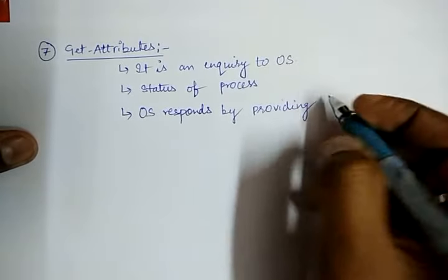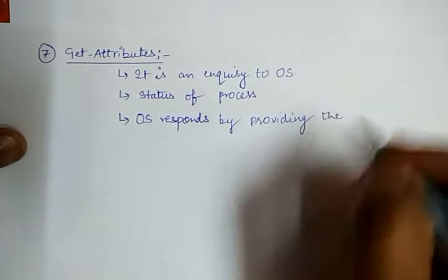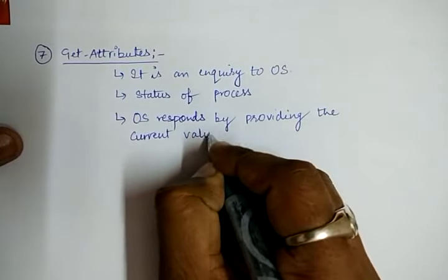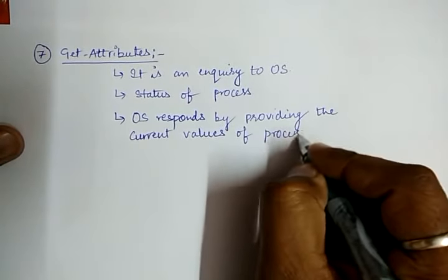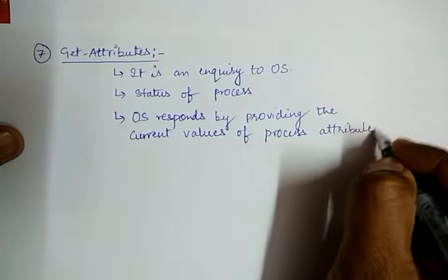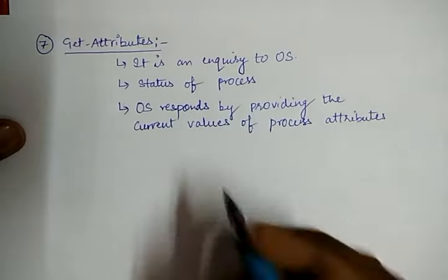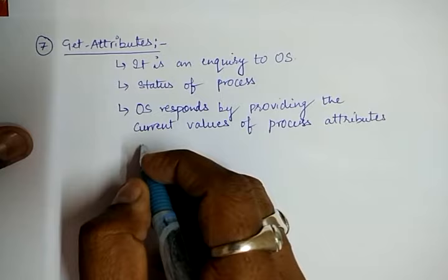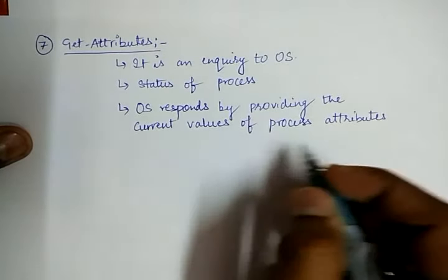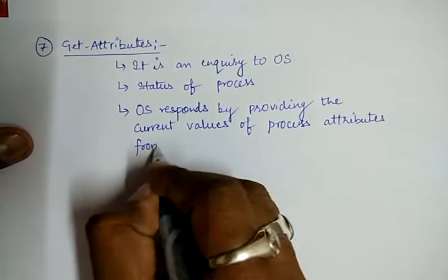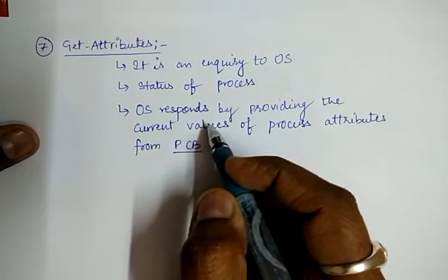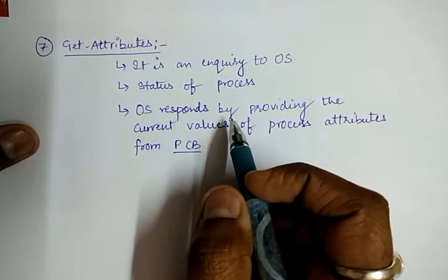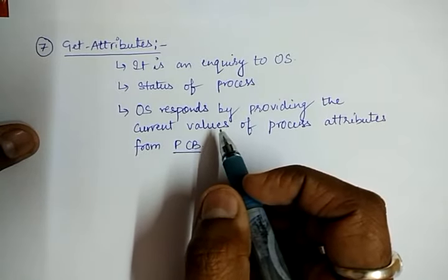The operating system responds by providing the current values of the process attributes. These process attributes are stored in the operating system's process control block (PCB). So the OS responds by providing the current values of process attributes from the PCB, since a process neither knows where its PCB is nor can access the protected system space where PCBs are usually kept.